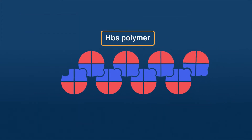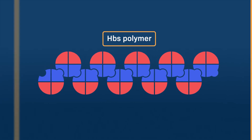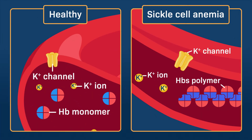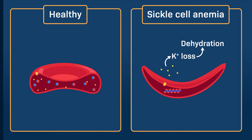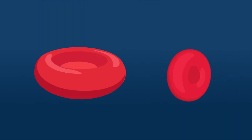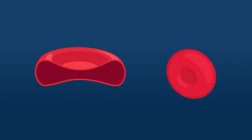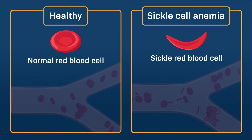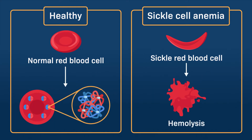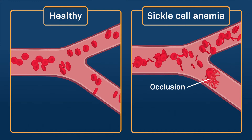The formation of these long hemoglobin polymer fibers triggers a cascade of several other cellular abnormalities, such as ion channel dysregulation and membrane deformation. As a result, red blood cells deform. Instead of the typical smooth, elastic, donut shapes of red blood cells, they take on the characteristic ragged, fragile, sickle shapes. This makes it harder for them to pass through narrow blood vessels, makes them prone to hemolysis, and leads to occlusion and ischemia.